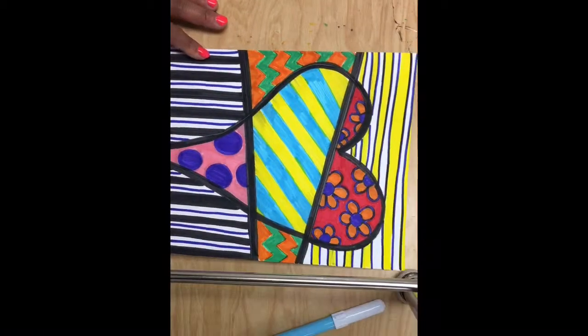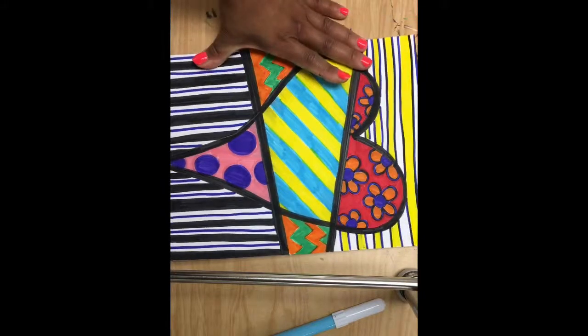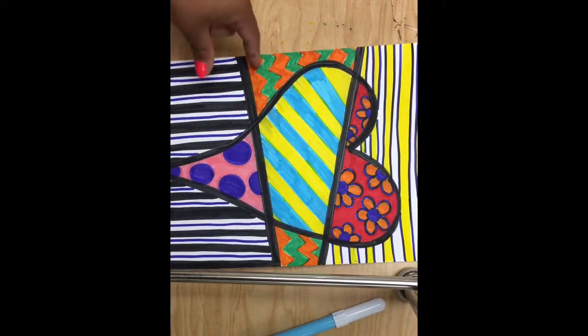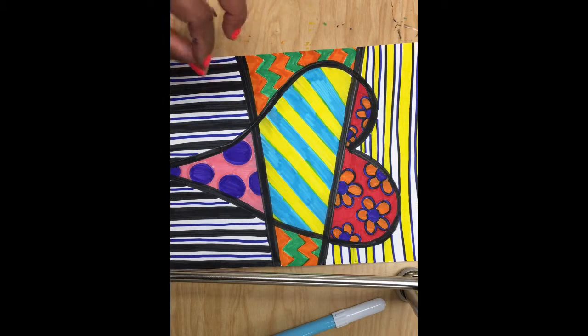We're finished! All you need are three patterns in the heart and three different patterns in the background. Make sure your lines are smooth, don't scribble-scrabble, and keep your white space to a minimum.